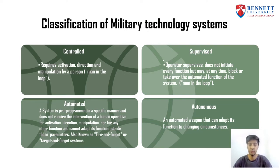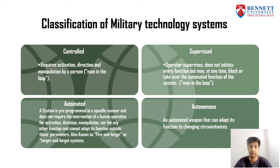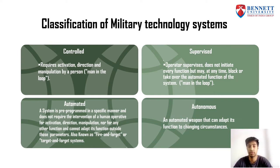There are four main types of military technology systems: Controlled, Supervised, Automated, and Autonomous. A Control system requires activation, direction, and manipulation by a person — it is completely controlled by a human operator, for example, driving a car. A Supervised system means the operator supervises but does not initiate every function, and may at any time block or take over the automated function of the system. It is slightly automated, but its controls are completely dependent upon the human operator.